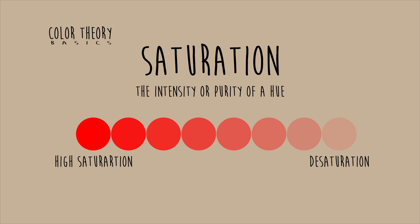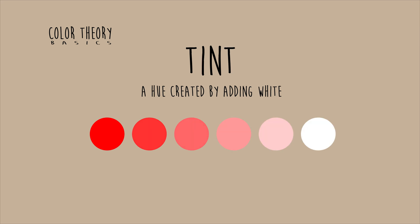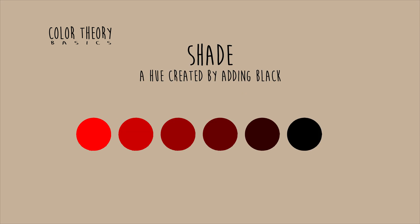High saturation is on the left and desaturation is on the right. Tone is created by adding gray to a hue — these are examples of that. Tint is created by adding white to a hue, and shade is a hue created by adding black to a hue.